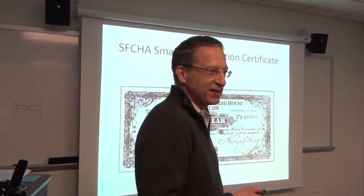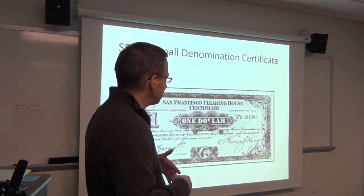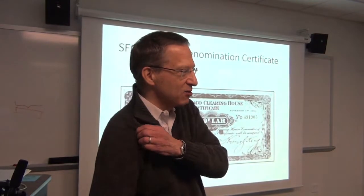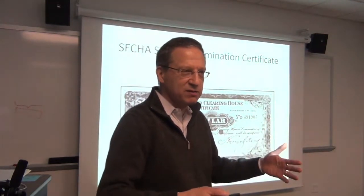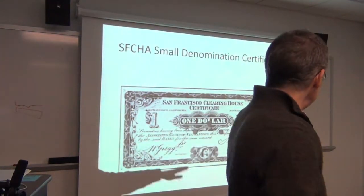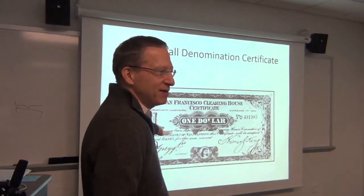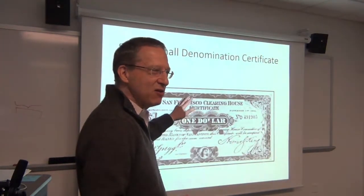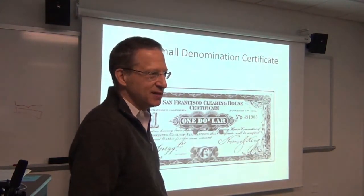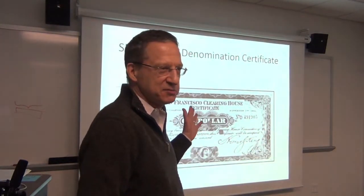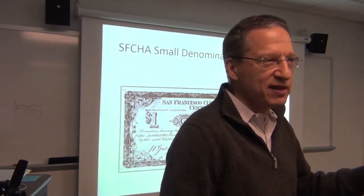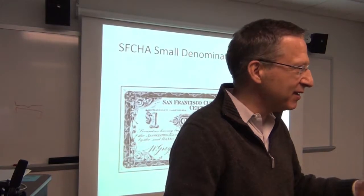Other clearing houses also issue large denomination certificates, and many of them also issue small denomination certificates — denominations of a dollar, five dollars, and so forth. This is not for interbank transactions; these are paid out to depositors. A bank needing cash goes to the clearing house and says, 'We've got good assets but lack cash — we're illiquid but solvent. We want to pledge these assets and borrow money in small denominations to pay our customers.' It has no more backing and no more legitimacy than the authority of the local banking system. What is really amazing is that customers just take this stuff and spend it, stores accept it, deposit it in their banks, and it just works.